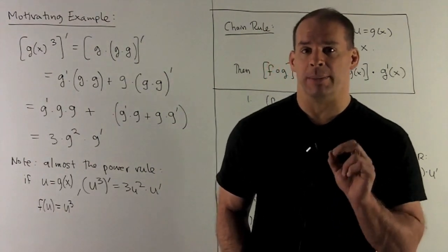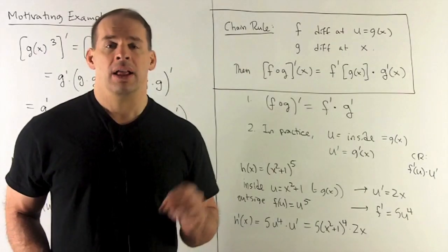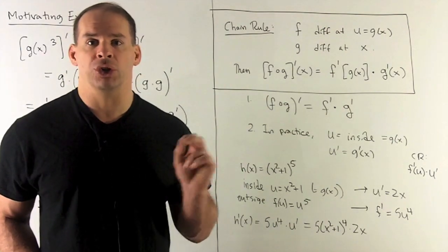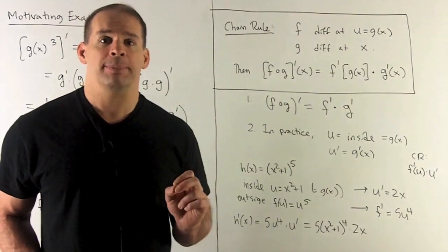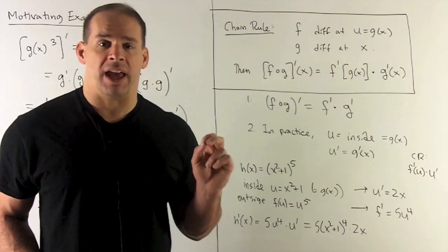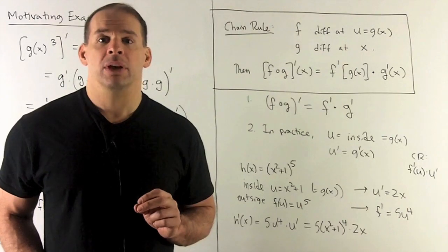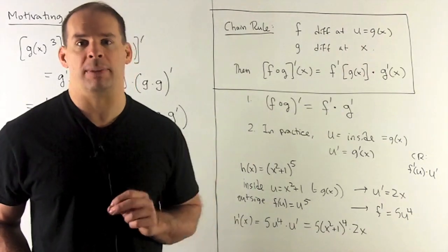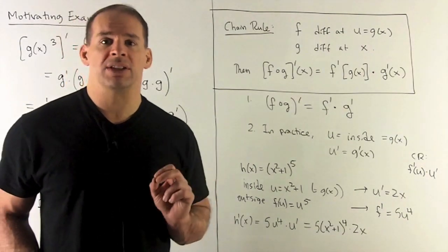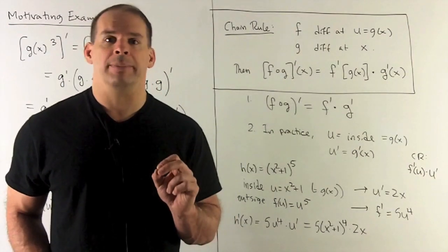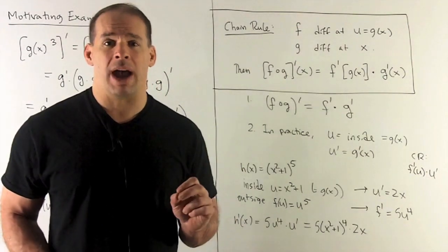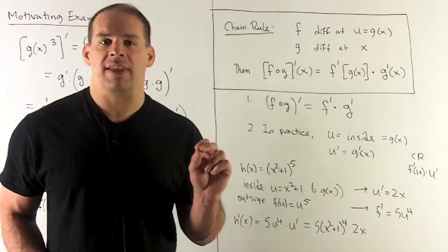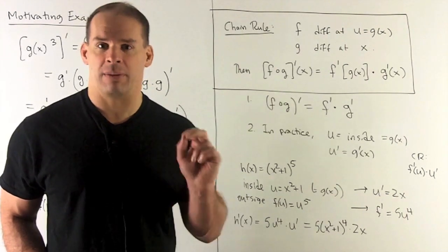Let's formalize this with the statement of the chain rule. We have function f, which is differentiable at the point u equal to g of x, with a function g which is differentiable at the point x. If I take f composed with g and take its derivative, the rule is: take f prime, evaluate at g of x, and then multiply by g prime of x. If you squint at this, it looks like what we would want — f composed with g prime equals f prime times g prime — but note, we have to be careful about what we put on the inside of f prime.